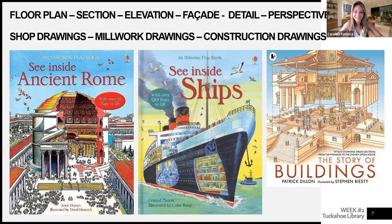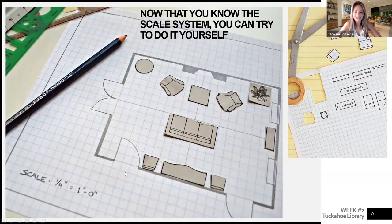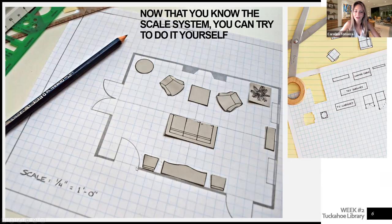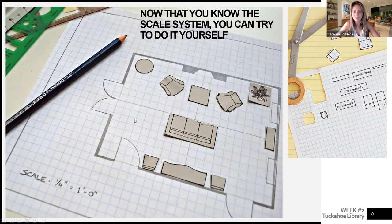A floor plan is a slice of the building horizontally. That's how you see a wall in a horizontal section. You also see a door, and that quarter-circle line is called the door swing — it shows which direction the door opens. This is a double door swinging out. All of these are ways to represent your room in a floor plan.